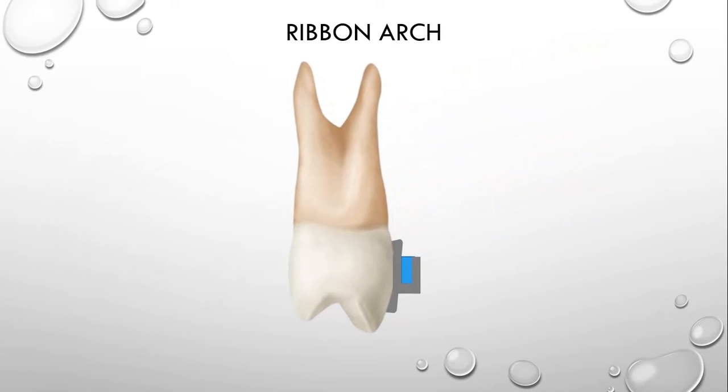Now after the invention of ribbon arch, standard edgewise was invented. And what was the basic difference that was brought into the standard edgewise? Just changing the orientation of the wire slot. Now you will appreciate that edgewise also has a rectangular slot for the wire and rectangular wire can be placed inside, but the direction of the wire insertion is horizontal.